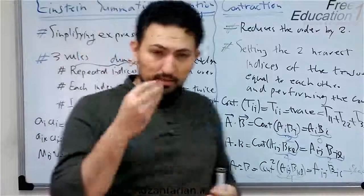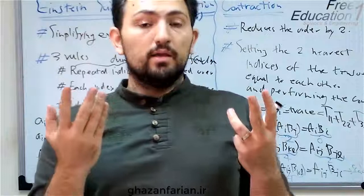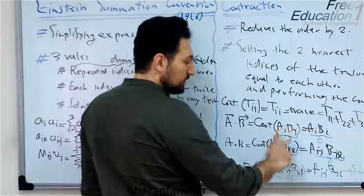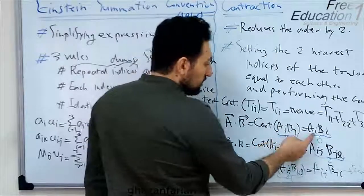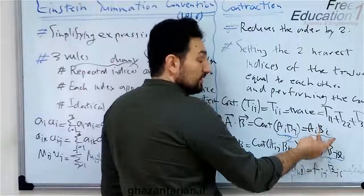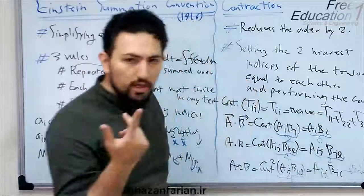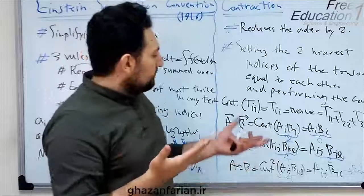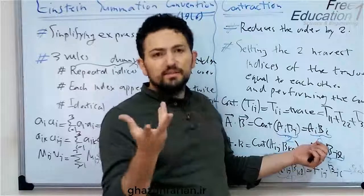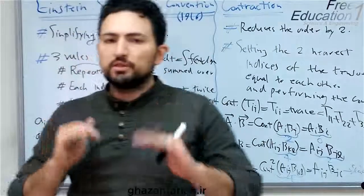You can understand why the contraction process reduces the order of results by two: we have two non-repeating indices, so the order of the tensor is two. When we set one index equal to the other, that index becomes a dummy (repeating) index, leaving no non-repeating indices, so the order of the result is zero — a scalar. The contraction process always reduces the order by two.